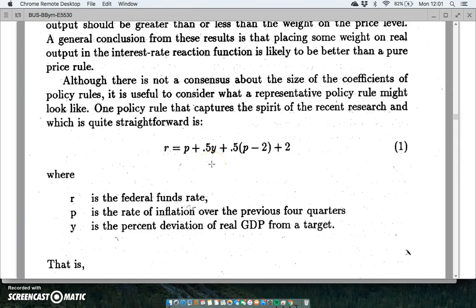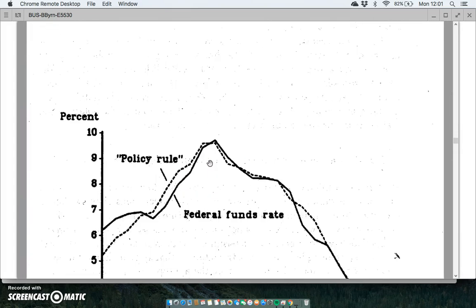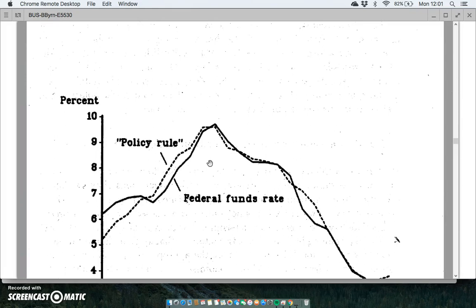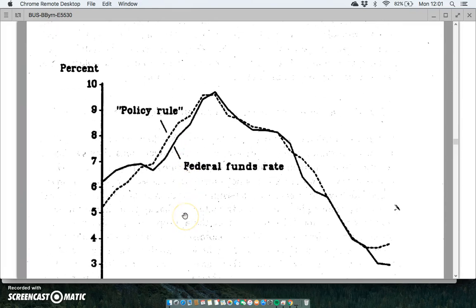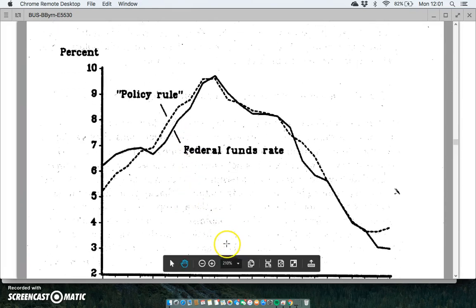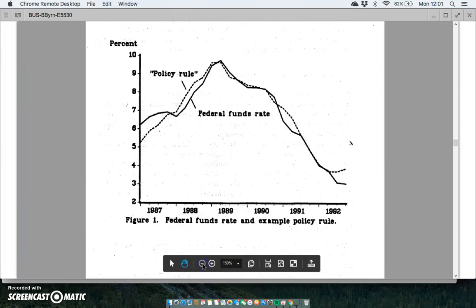In particular, looking at instead of measuring directly the output gap using GDP, the variable that we might substitute in here to estimate capacity in the economy would relate to unemployment.